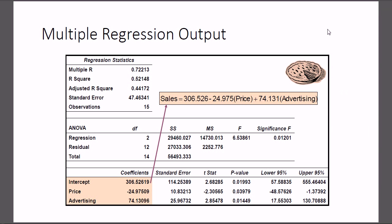Welcome back. This is part two of introduction to multiple regression. We're going through our slides for the topic and then we'll follow up with an example on how to get all these values using software. We were talking about the PI sales data — we're trying to predict PI sales (there should be a hat on this) using the price and the amount spent on advertising. We ran the multiple regression equation with these two independent variables.